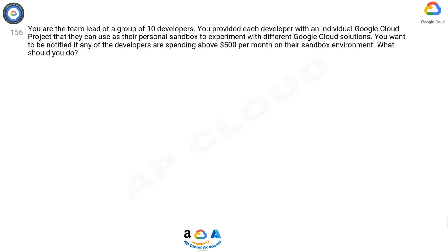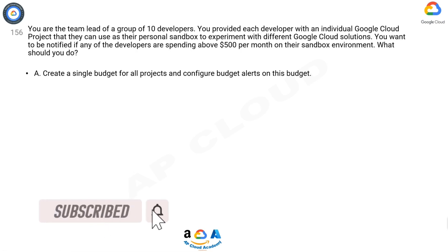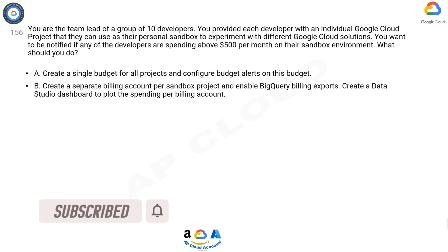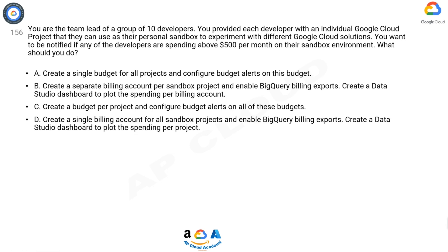What should you do? A: Create a single budget for all projects and configure budget alerts on this budget. B: Create a separate billing account per sandbox project and enable BigQuery billing exports, then create a Data Studio dashboard to plot the spending per billing account. C: Create a budget per project and configure budget alerts on all of these budgets. D: Create a single billing account for all sandbox projects and enable BigQuery billing exports, then create a Data Studio dashboard to plot the spending per project.